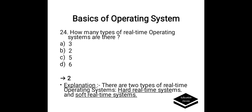How many types of real-time operating systems are there? Option A. 3, B. 2, C. 5, D. 6. Correct answer is option B, 2. There are two types of real-time operating systems: hard real-time systems and soft real-time systems.